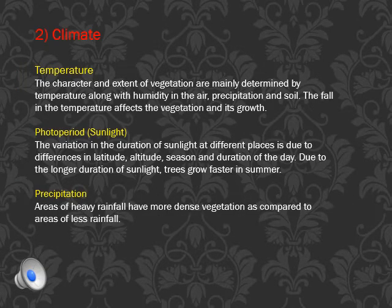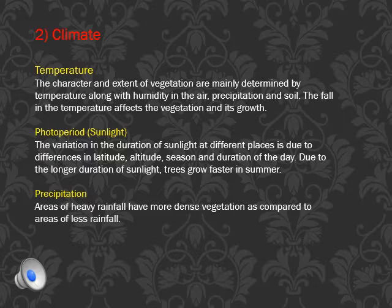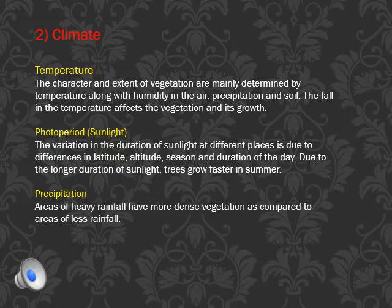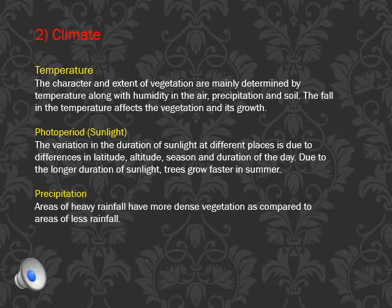The second factor is climate, subdivided into temperature, photoperiod, and precipitation. The character and extent of vegetation are mainly determined by temperature, along with humidity, precipitation, and soil. On the slopes of the Himalayas versus the plains region, there is a lot of difference in vegetation. Above 915 meters, the fall in temperature affects the type of vegetation grown. This temperature change explains why Himalayan and plain area vegetation differs greatly.